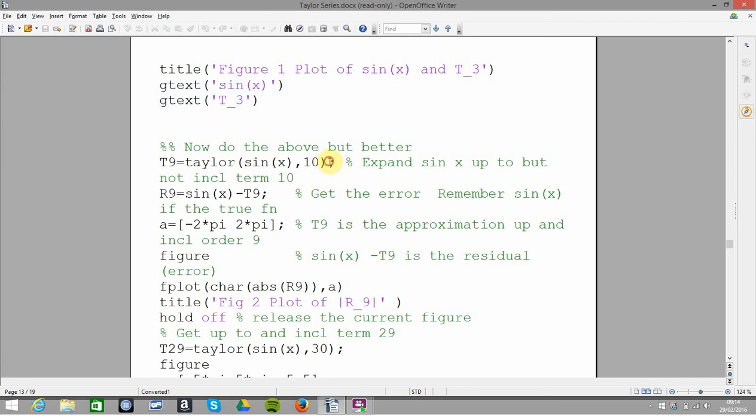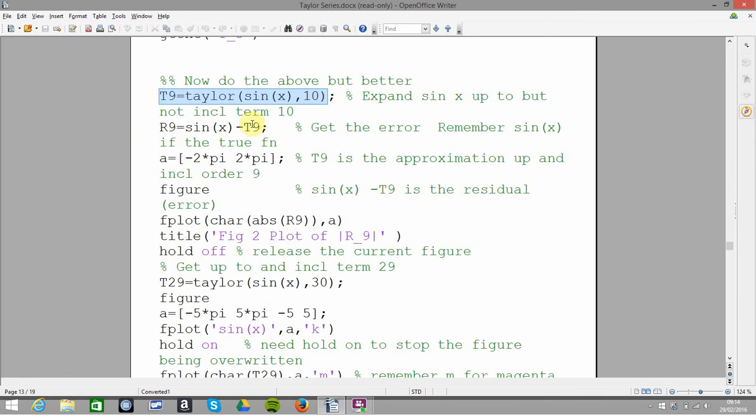So here I'm doing sine x for order 10, so it's up to x to the 9. And then here I'm getting the R, I put in R for residual. Residual 9, the difference between sine x, that'd be the gold standard, the true standard, and t9, your estimation.